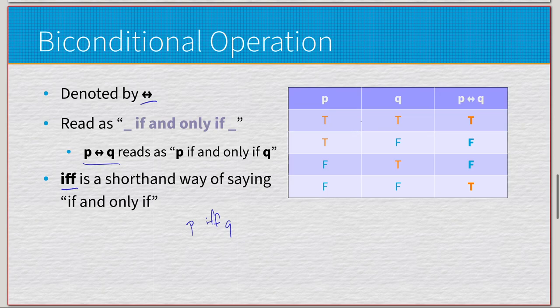Now this one is true only when both inputs are the same. We have true and true, or false and false, both result in true. However, whenever they differ from each other, so true if and only if false doesn't make sense, so it's false. And false if and only if true doesn't make sense, so it's also false. This is very similar to the XOR operation.